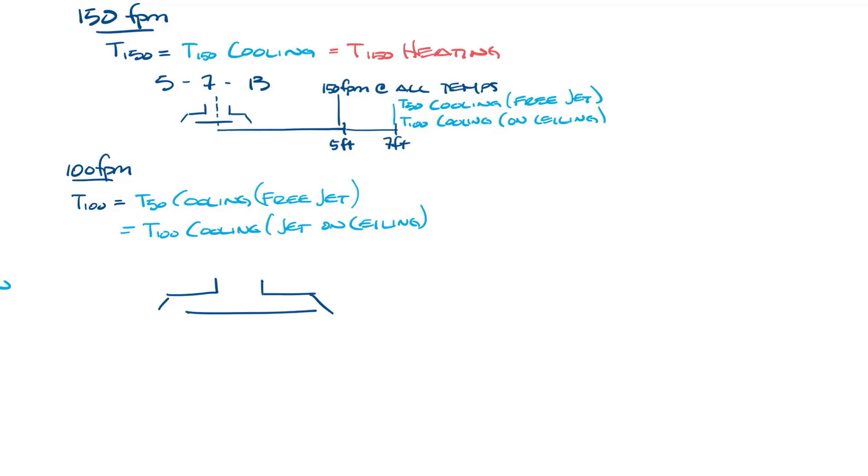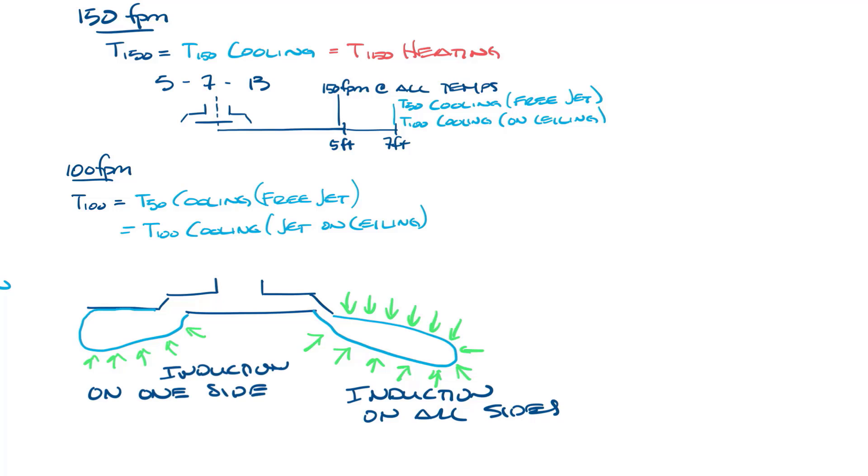The difference in throw for a free jet versus a jet moving along a surface like a ceiling is that the free jet can induce air on both sides, but a jet on the ceiling can only induce air on one side. Induction is when room air is mixed into the supply air stream. Induction of room air slows the jet down and shortens the throw.